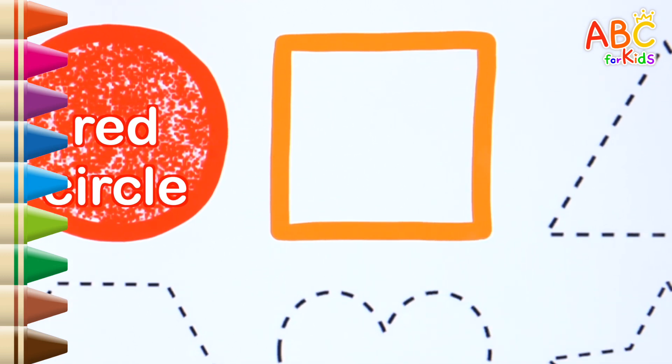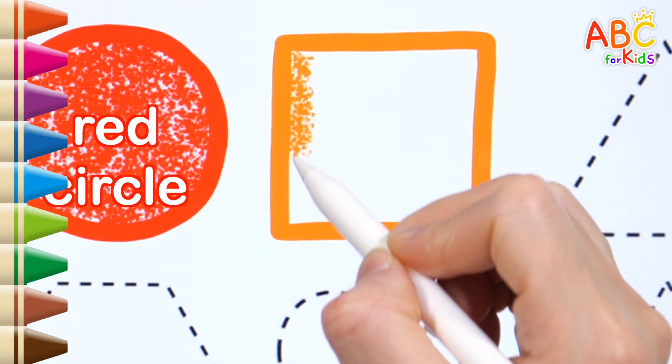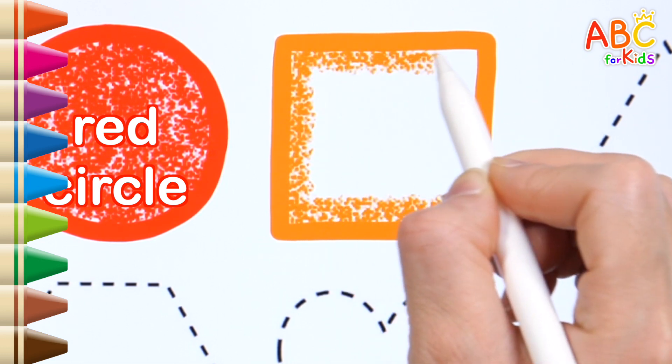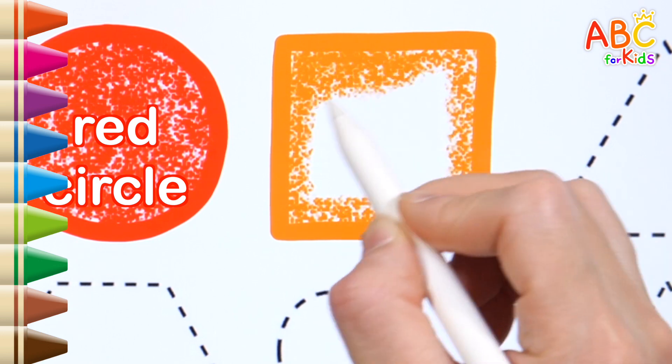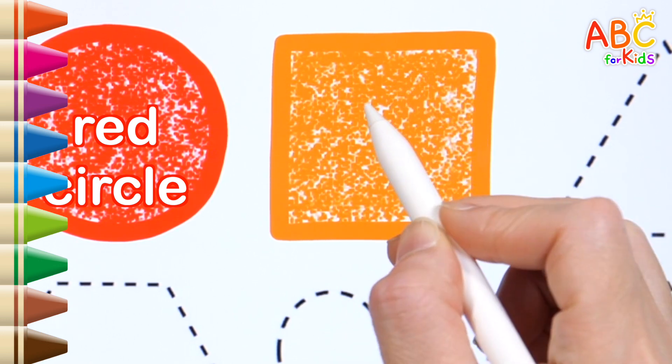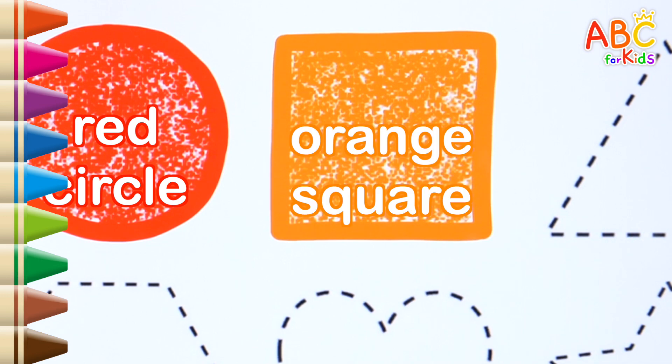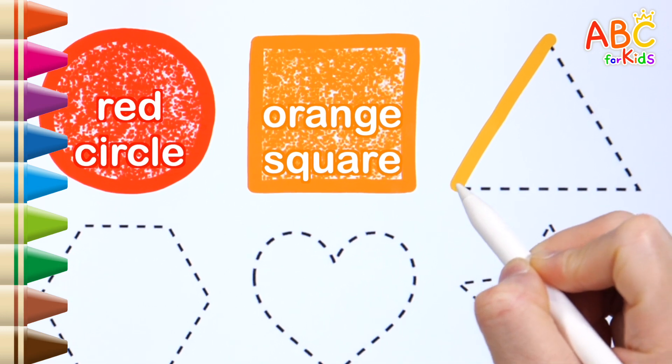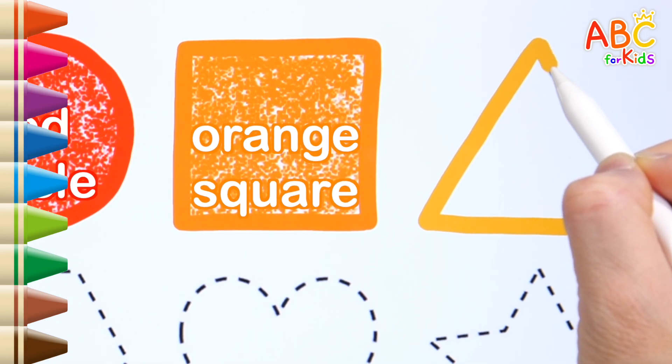What shape is it? That's right, this is a square shape. Orange. It's an orange square. I know my ABCs, next time won't you sing with me.